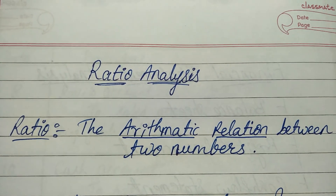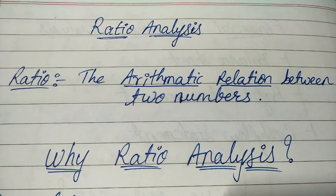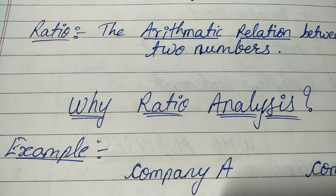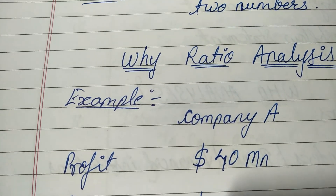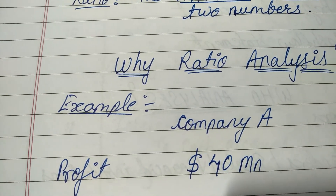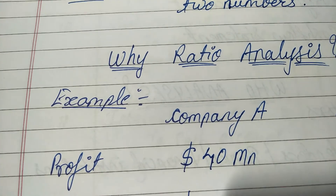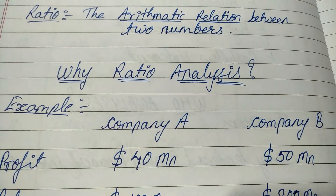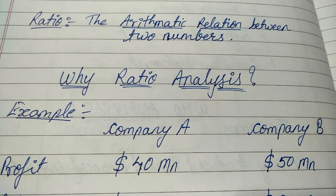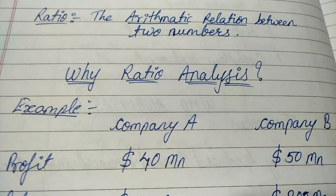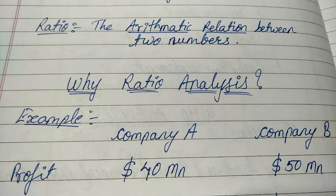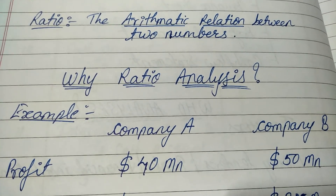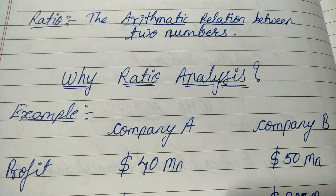Let us understand why we need to carry out ratio analysis with the help of an example. Assume that Company A has made a profit of 40 million dollars — is it good or bad? A company making profit is always good. But if Company B has made a profit of 50 million dollars, you would say Company B is better because its profit is higher by 10 million dollars. However, making decisions based on a single absolute figure may mislead you and lead to wrong decisions.